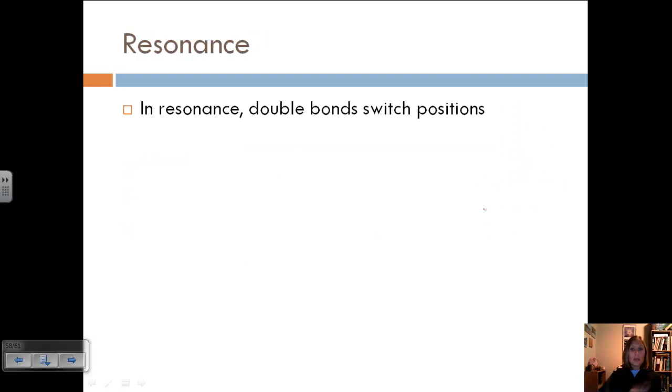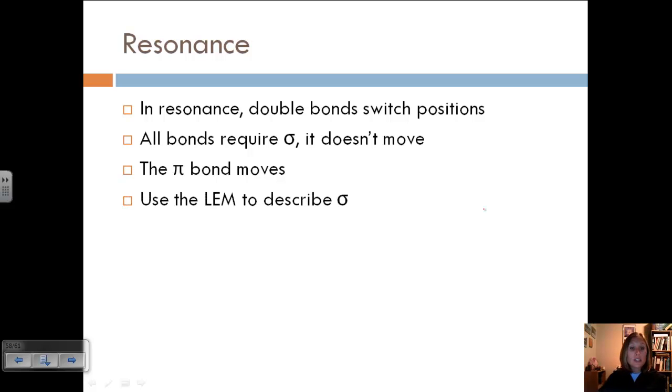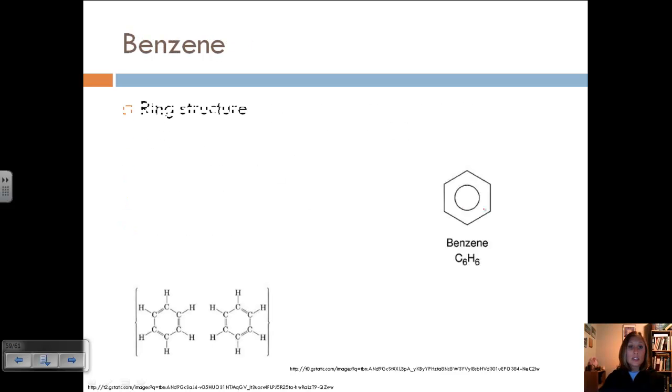And so we can basically combine the two models to describe molecules that require resonance. In resonance, we say that those double bonds kind of switch positions between, for example, in the NO3 one minus between the N and the different oxygens. All bonds require at least a sigma bond, and that sigma bond doesn't move. So that's why, if we have all single bonds, we wouldn't really have resonance. It's the pi bond, or what's used to create double and triple bonds, that moves. And so we can use the localized electron model to describe those sigma bonds, because they're not going to move anyway. And then we can use the molecular orbital model to describe pi bonds.